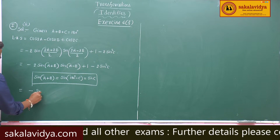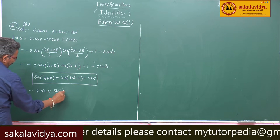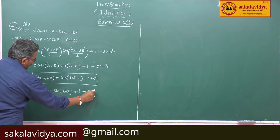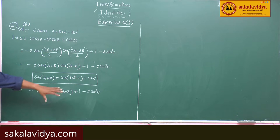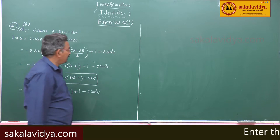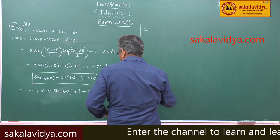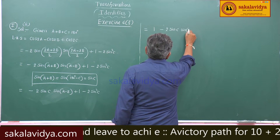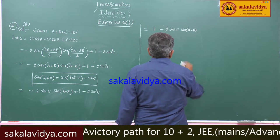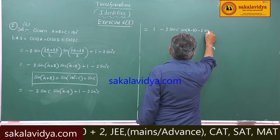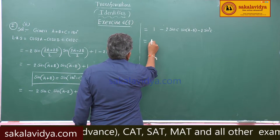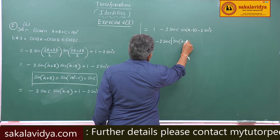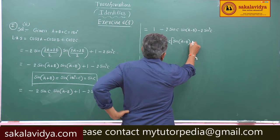This is equal to minus 2 sin C sin(A-B) plus 1 minus 2 sin squared C. Rearranging the terms: 1 minus 2 sin C sin(A-B) plus sin C. So 2 sin C is common, giving sin(A-B) plus sin C.